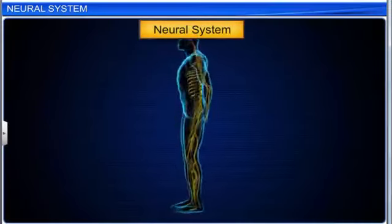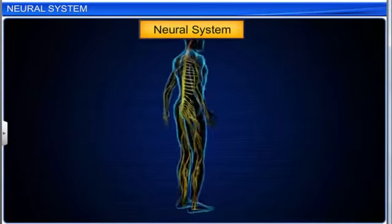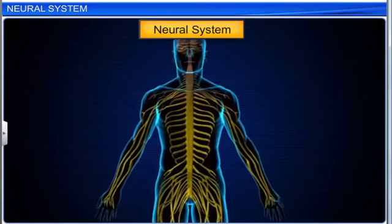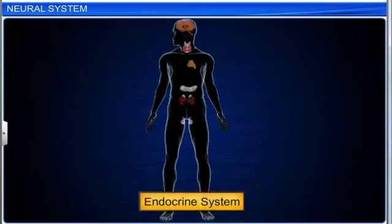The neural system provides a network of point-to-point connections for quick coordination of nerve impulses. The endocrine system provides chemical integration through hormones. Sometimes it acts very quickly, while at other times it acts with a lag.